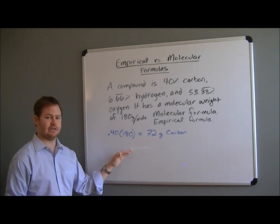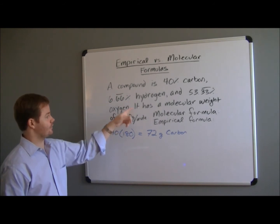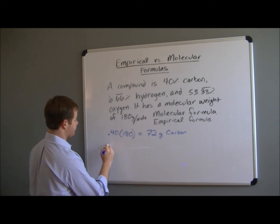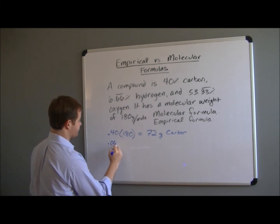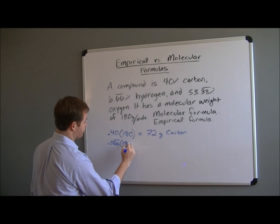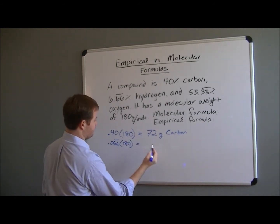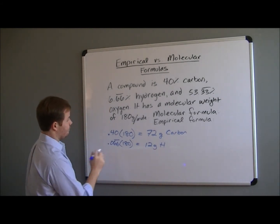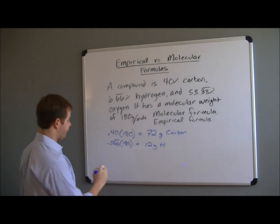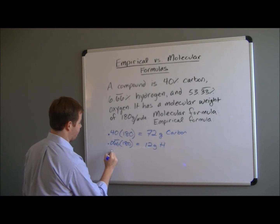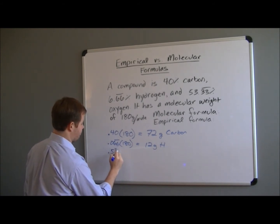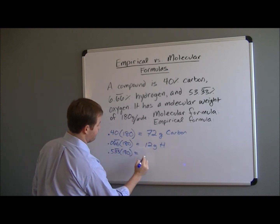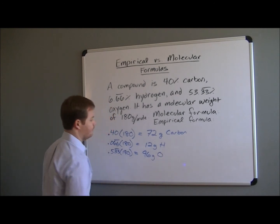We're going to do this same calculation for each of the others, hydrogen and oxygen. So here, for 6.66, that would be 0.0666 times 180. And when you multiply that out, you're going to get 12. So we're going to have 12 grams of hydrogen. And when we do the same calculation for the oxygen, 0.5333 times 180 is going to give us a total of 96 grams of oxygen.